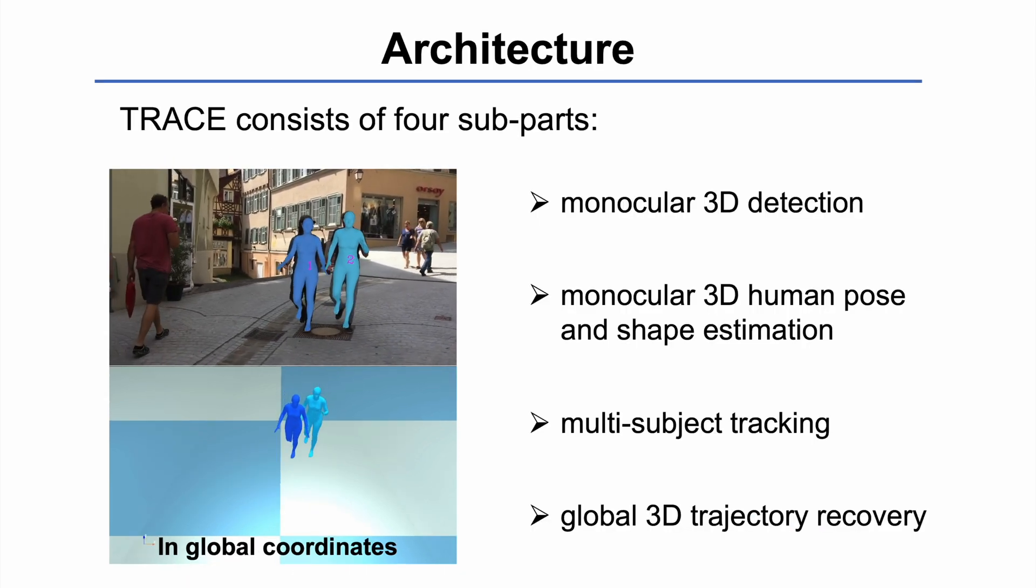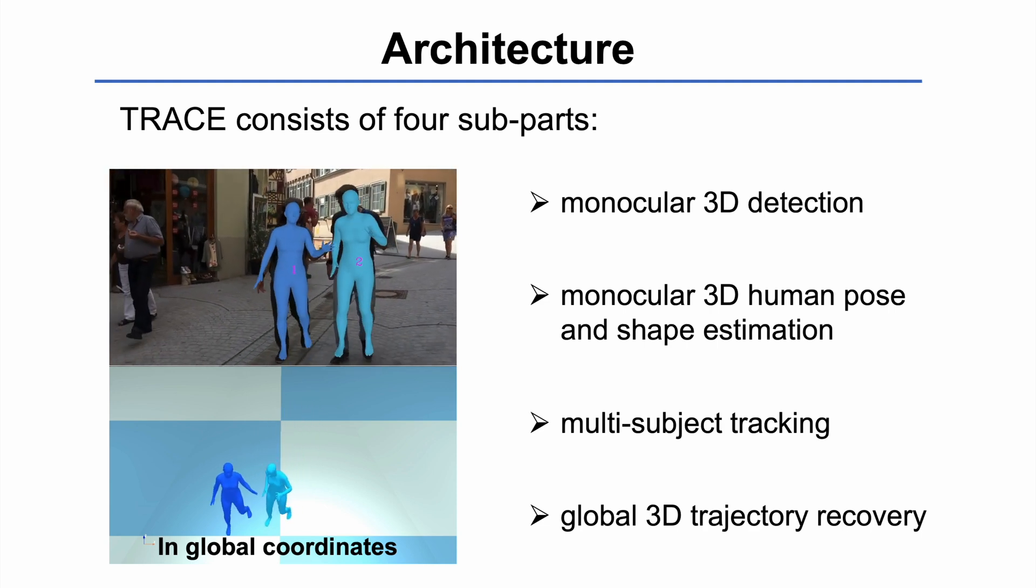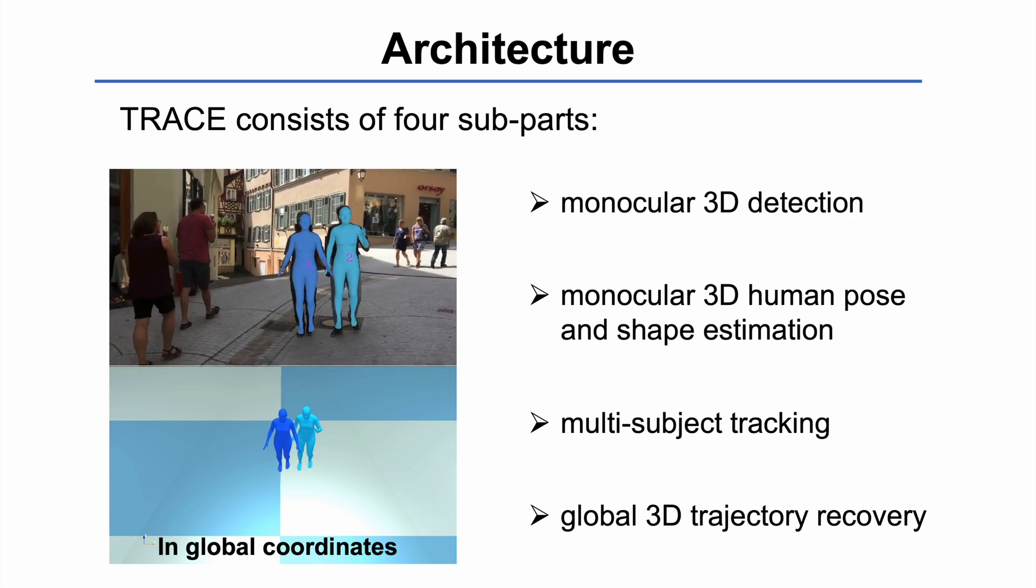TRACE consists of four subparts: monocular 3D detection, monocular 3D human pose and shape estimation, tracking, and recovering their global trajectories.